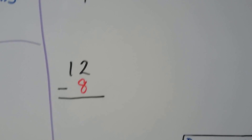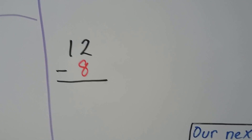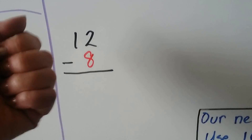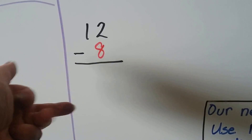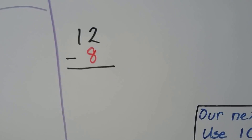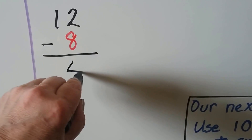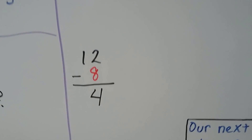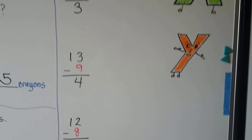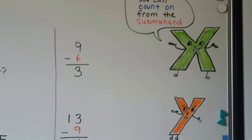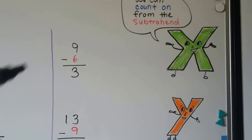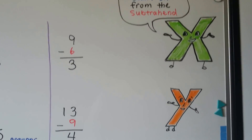12 minus 8. We can start with the subtrahend, 8, and count up to 12: 8, 9, 10, 11, 12. That's 4. So 12 minus 8 is equal to 4. We can count on from the subtrahend — from the number we're taking away — and go up to the minuend.